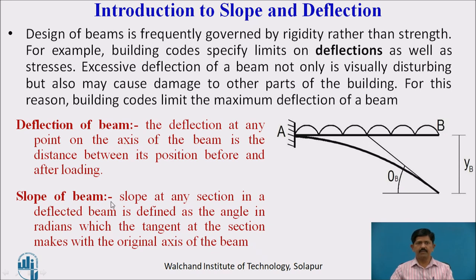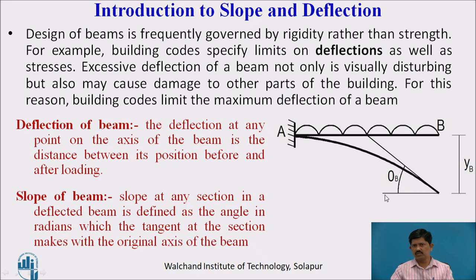The slope at any section in the deflected beam is defined as the angle in radians which the tangent at the section makes with the original axis of the beam. This is the curvature where the beam deflects and this is the tangent line. The reference horizontal axis of the beam is shown, and theta_b is the slope of the beam.